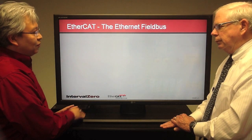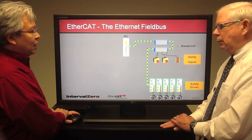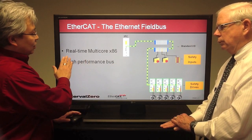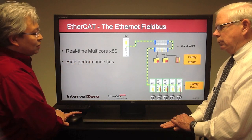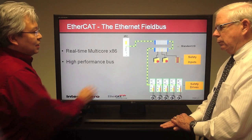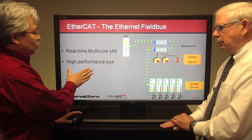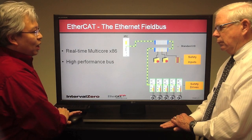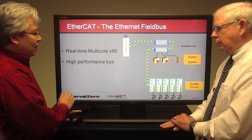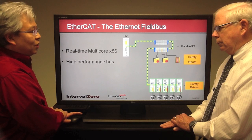Taking this before photo and moving to the same system on the RTX real-time platform with EtherCAT, we're going to talk about how we can get away from those processor limitations and have true real-time multi-core x86 hardware. We'll discuss how to remove those limitations from the industrial PC, and also how to replace bus limitations with a truly high-performance, scalable bus for an industrial system.